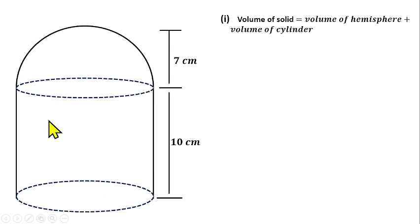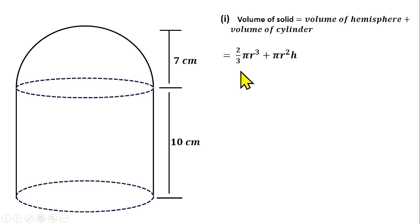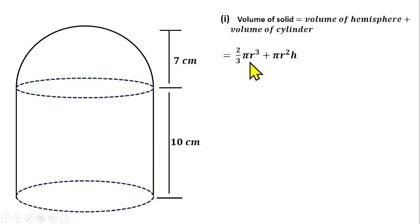The volume of a hemisphere is two-thirds pi r cubed — that is, 2/3 πr³. This is because the volume of a full sphere is 4/3 πr³, and if you divide it by two that gives us 2/3 πr³ for the hemisphere. Plus the volume of a cylinder is πr²h.